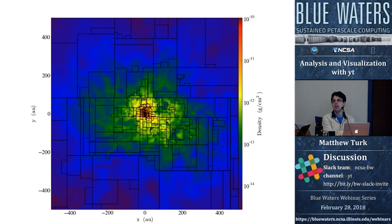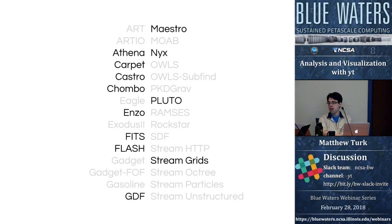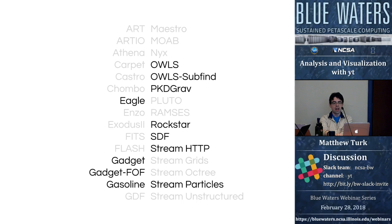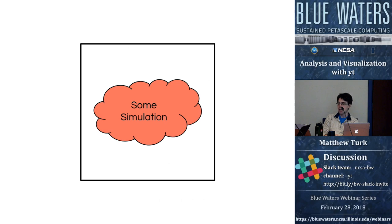We can read in data from a bunch of different simulation codes and generate fixed representations of it. We can read in octree data like Art, Art.io, or Ramses. We can read in grid data from codes such as Enzo, Flash, Pluto, and Maestro. We can read in particle data from n-body or SPH codes, and we have some support for unstructured mesh such as Exodus2 or the Moab data format.